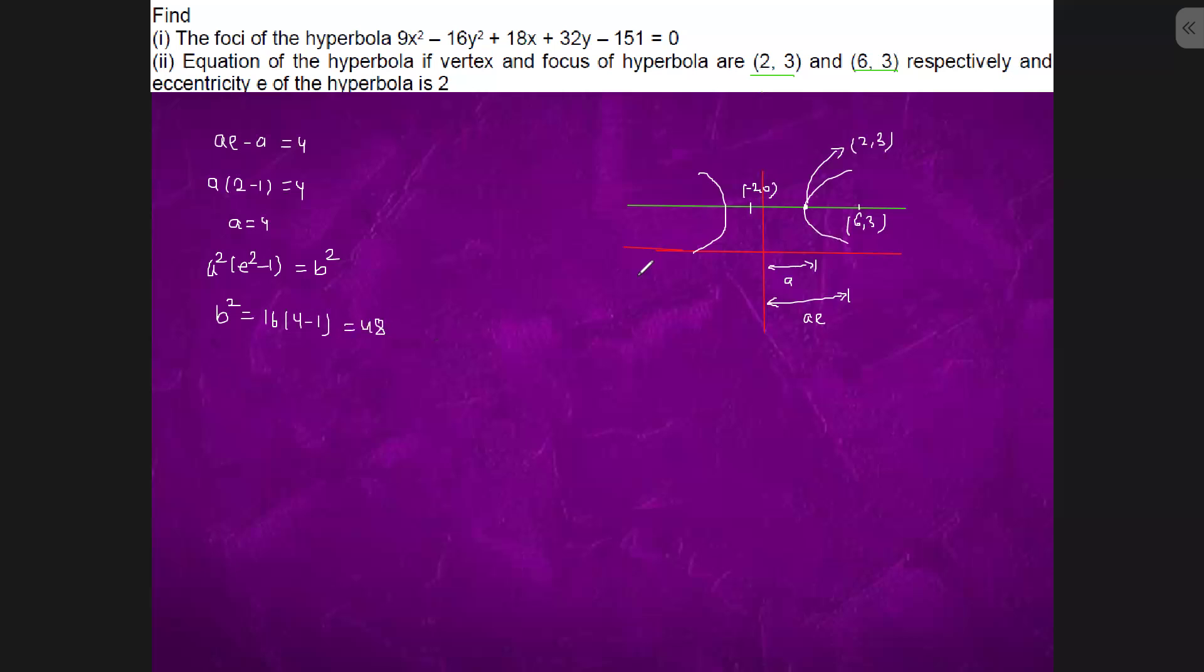So center is minus 2 comma 3. How we got? We will have the distance of a equals to 2. So 2 minus 2 will be 0, no, 2 minus 4 will be minus 2.